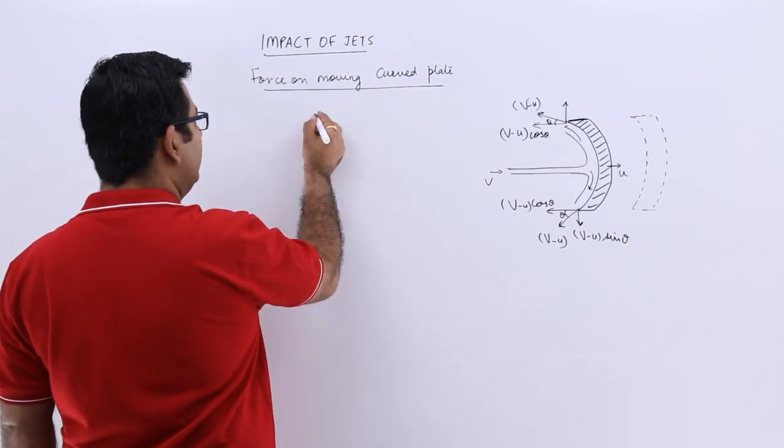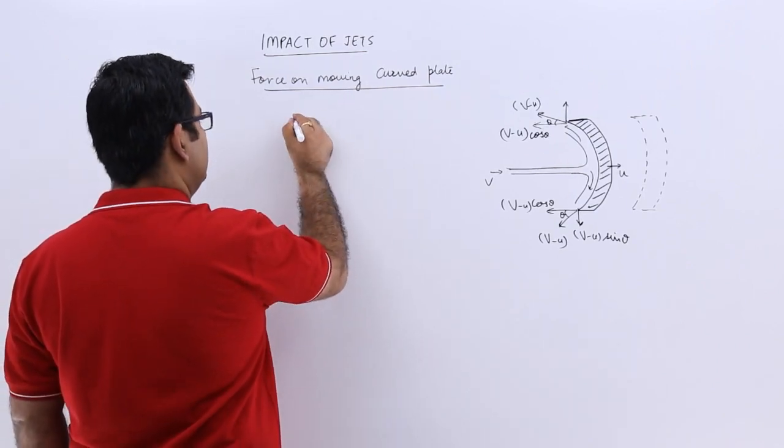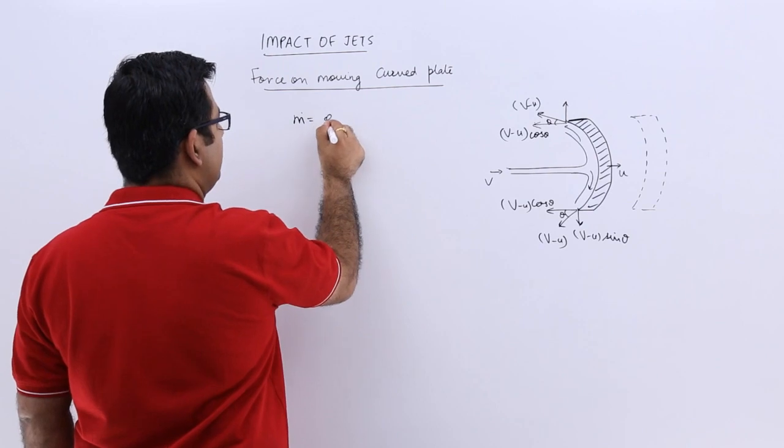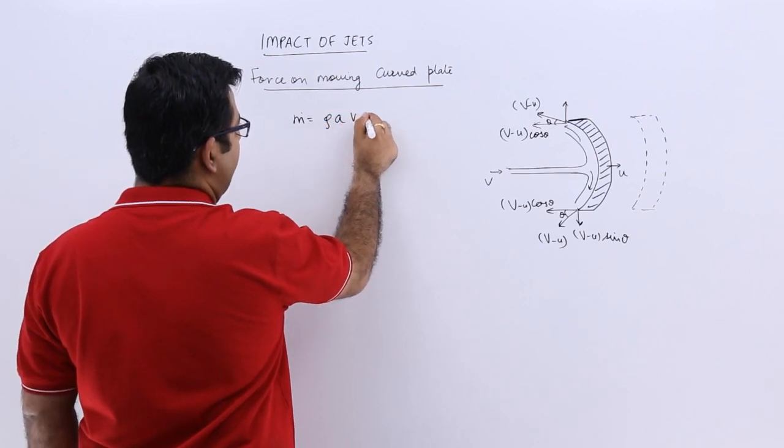So if you write down the mass flow rate, mass flow rate is rho into a into v minus u.